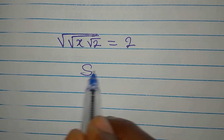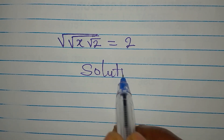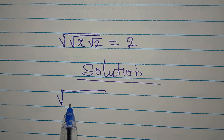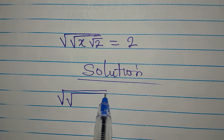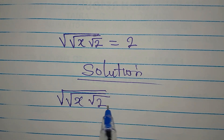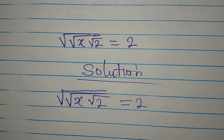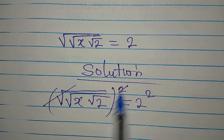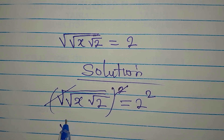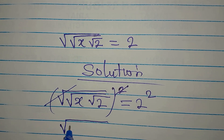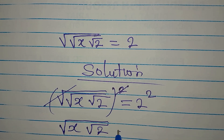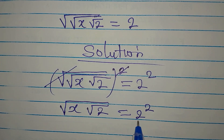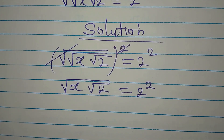Okay, let's deal with this in two ways. The first method: we have the square root of the square root of x times the square root of 2, equals 2. Do not bother — just square this and square this. These will cancel, and the first square root is gone. We now have the square root of x times the square root of 2, equals 2 squared.